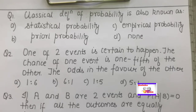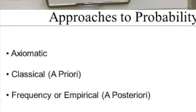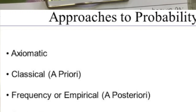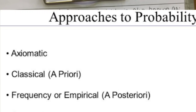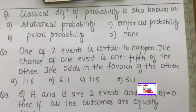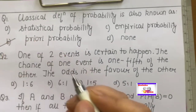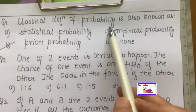The first question is the classical definition of probability. In probability, there are three approaches: the classical approach, the statistical approach, and the axiomatic approach. The classical approach is the first approach by which you can numerically calculate probability. The classical approach is also called the mathematical approach and also called prior probability.